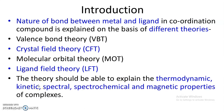Each theory should be able to explain the thermodynamic, kinetic, spectral, spectrochemical, and magnetic properties of the complexes. Every theory has certain advantages and limitations. Valence bond theory is simple and explains various properties of coordination compounds, but it has certain limitations. Similarly, crystal field theory also has some advantages and disadvantages.